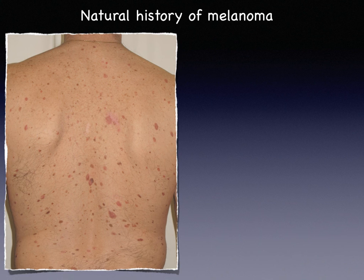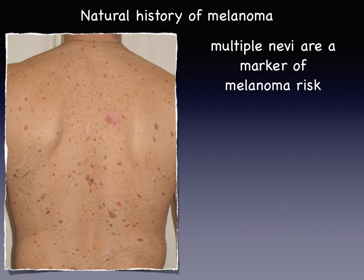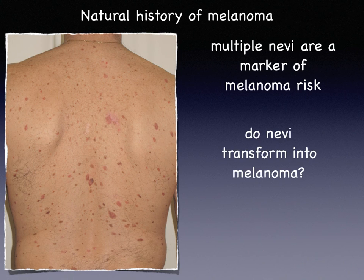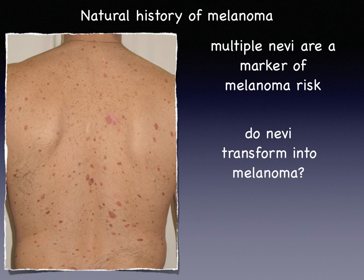We know nowadays that multiple nevi are a marker of melanoma risk, but still we do not have an answer to the question of whether nevi transform or not into melanoma. The argument of nevus-associated melanoma has been used by supporters of the theory that nevi transform into melanoma, but also by those who do not believe in this theory.